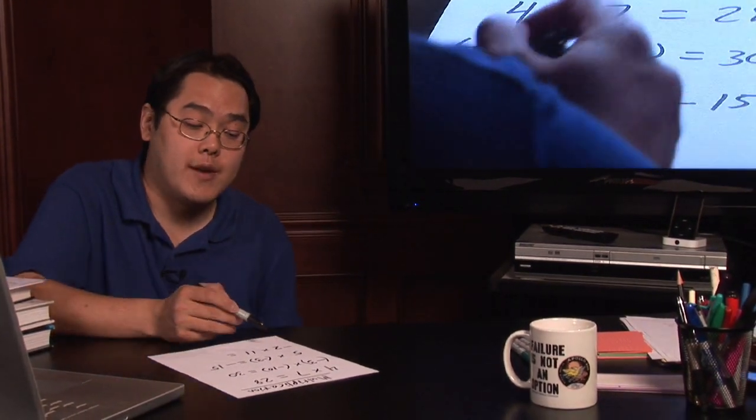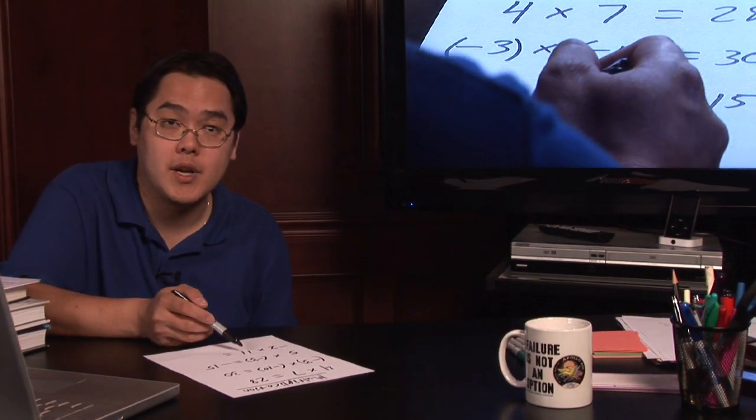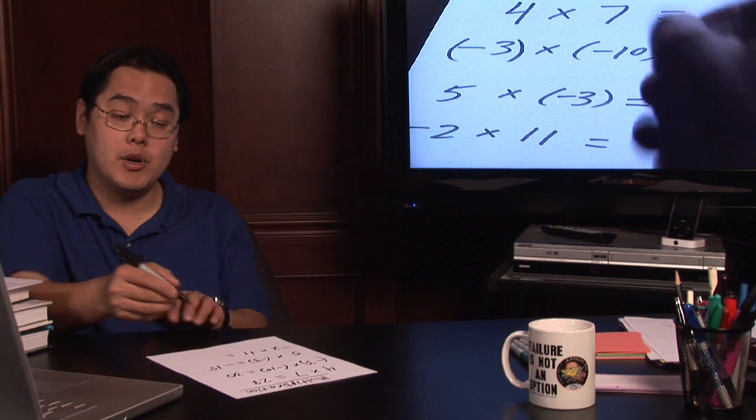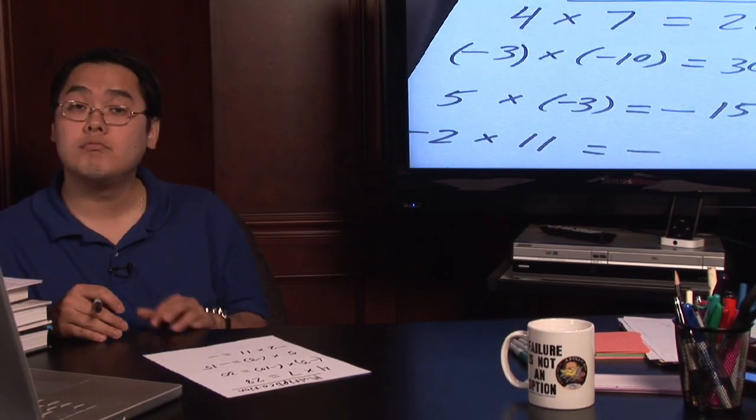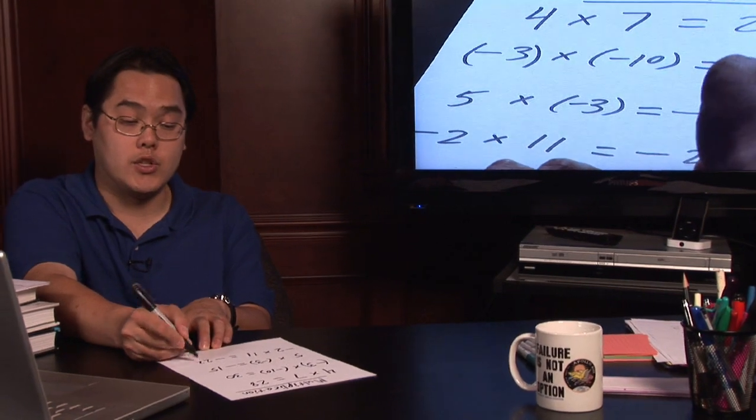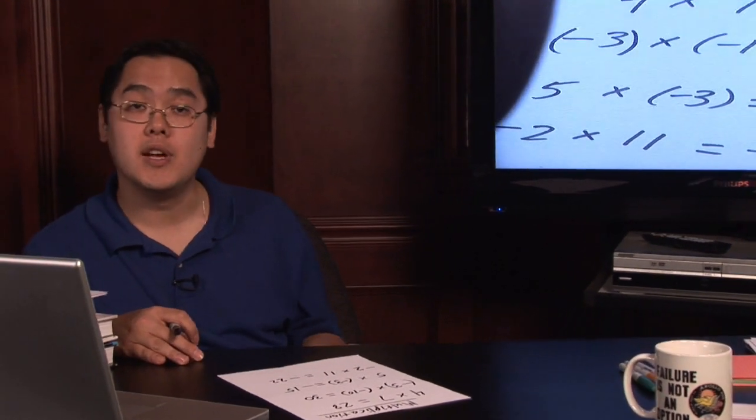The same thing happens if you have a negative number times a positive number. Negative times a positive is going to give you a negative number. You just have to figure out what two times eleven is going to be, which after some thought is going to give you twenty-two, so negative two times eleven is negative twenty-two.